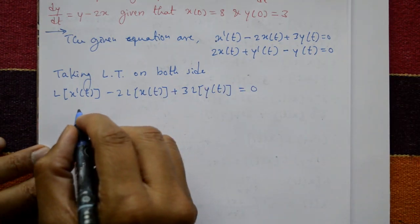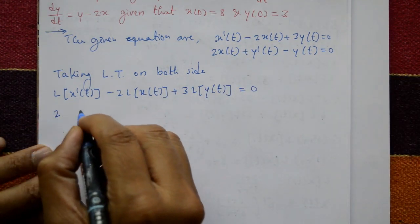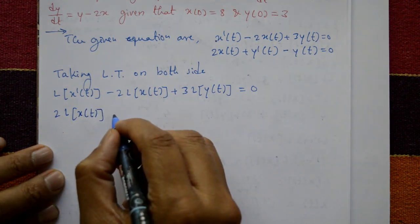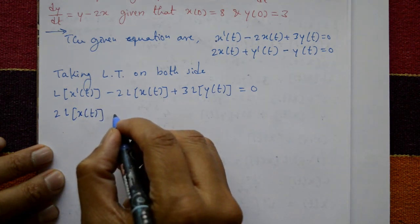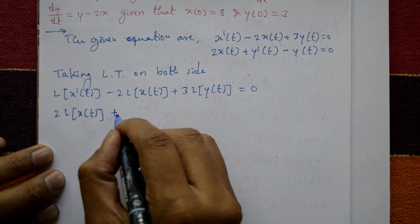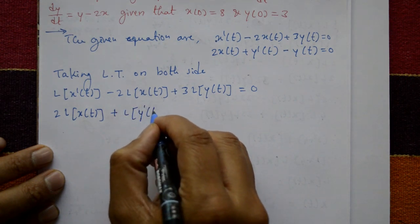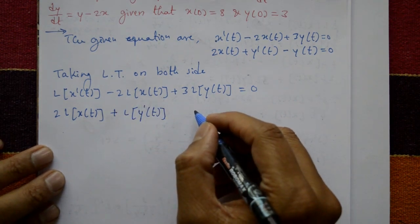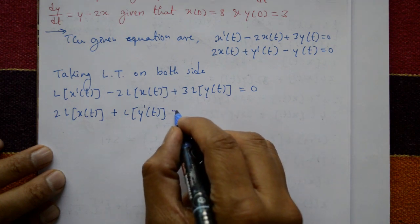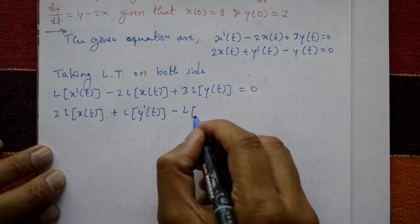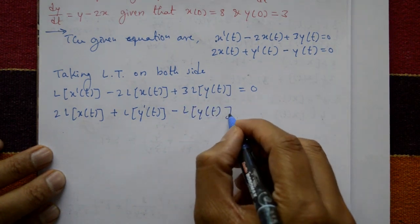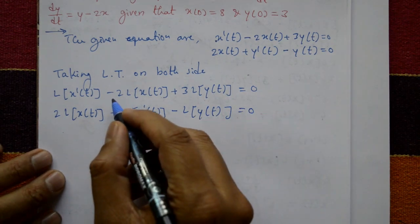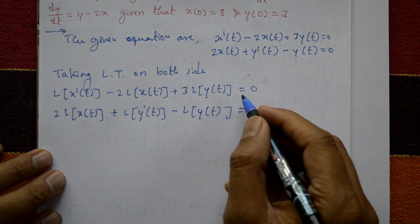The right-hand side is 0. For the second equation: −2·Laplace of x(t) + Laplace of y'(t) − Laplace of y(t) = 0. Now using the Laplace transform of derivative formula.